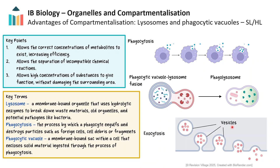Vesicles are designed to transport high concentrations of chemicals in bulk around the cell, or even to the cell surface membrane for secretion by exocytosis, as would be the case for a secretory cell producing a hormone. The high required output of hormone would not be possible without compartmentalisation. This would require a different mechanism, such as relying on facilitated diffusion out of the cell, which would not be rapid enough.